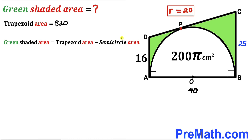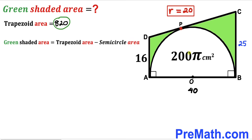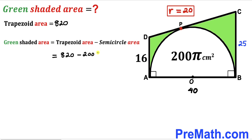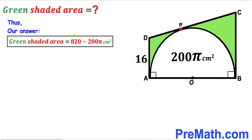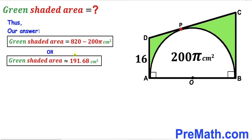In the final step, the green shaded region area = trapezoid area − semi-circle area = 820 − 200π cm². This is approximately equal to 191.68 cm². That's our final answer. Thanks for watching and please don't forget to subscribe for more exciting videos.